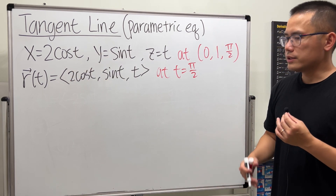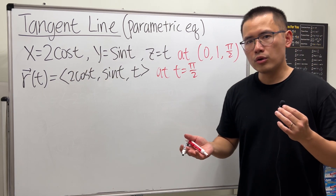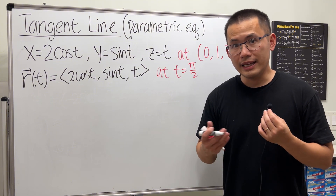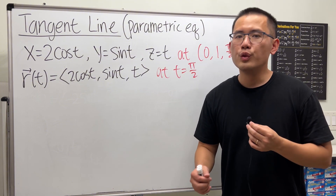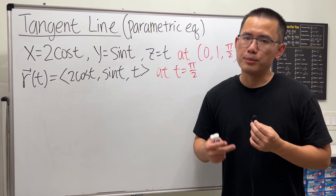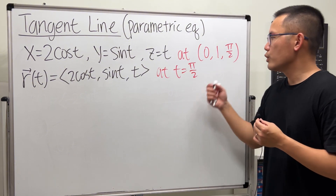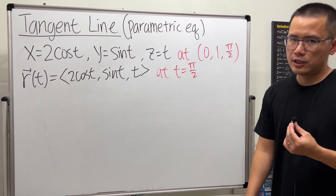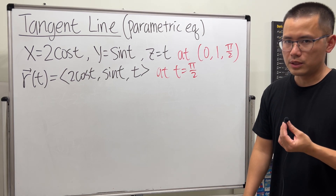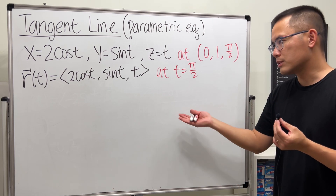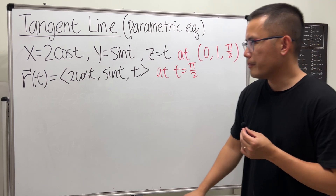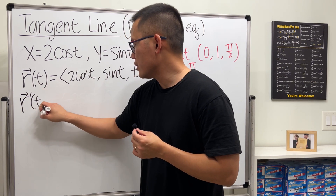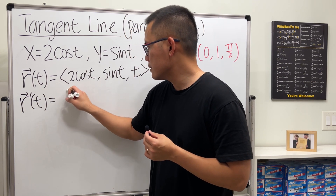Just like in earlier calculus, to find the equation of a tangent line — or a line in general — we need a slope and a point. We already have the point, and the slope is just the derivative. So it's pretty much the same idea. Let's go ahead and differentiate.